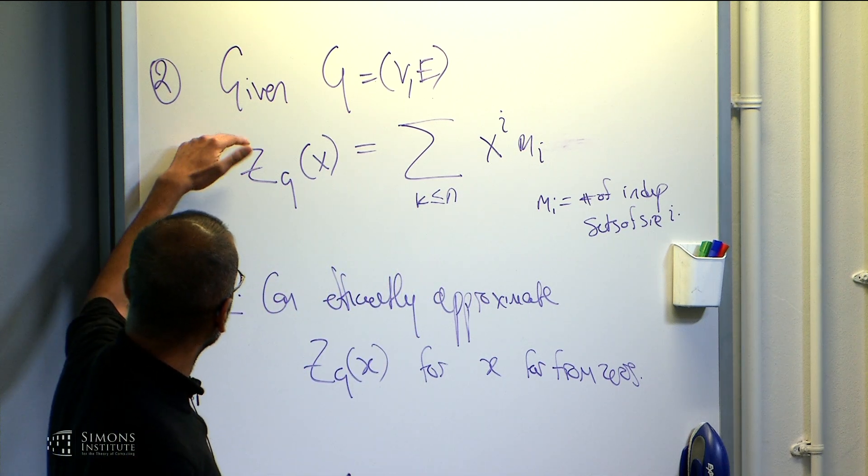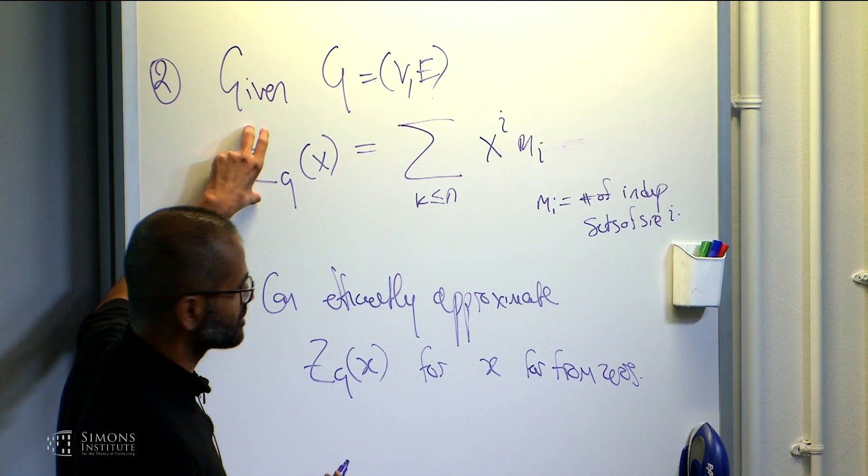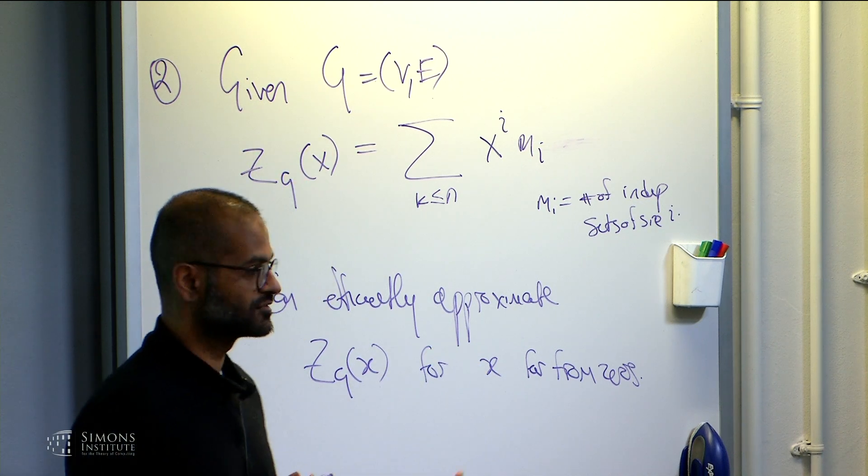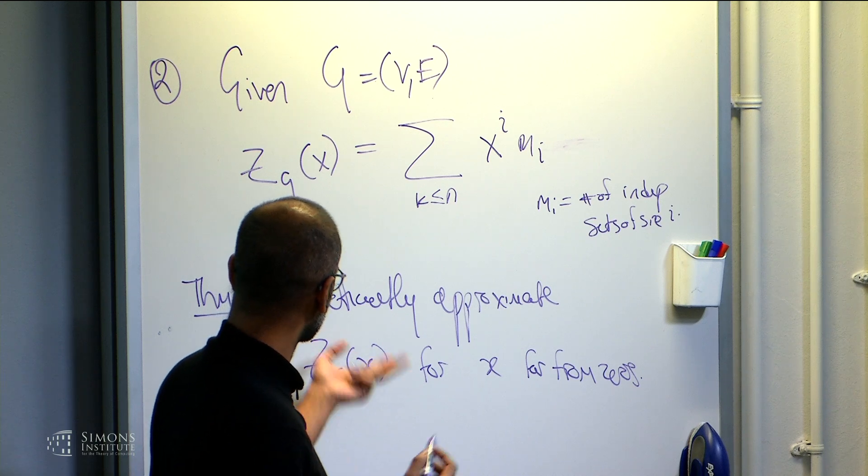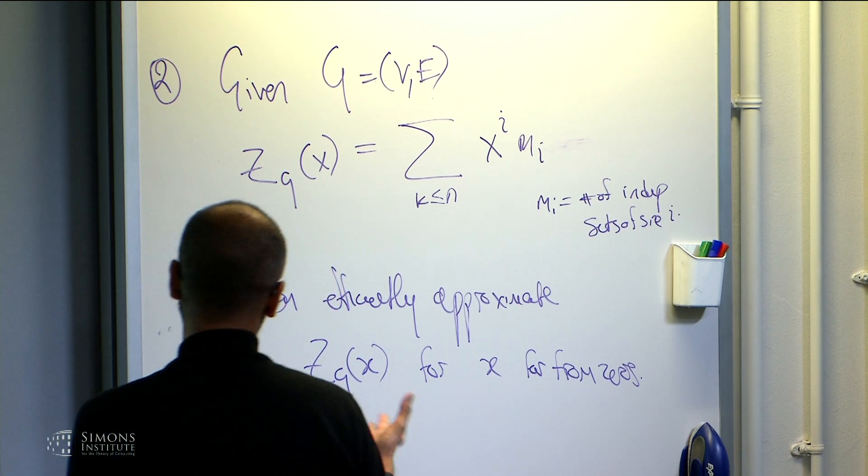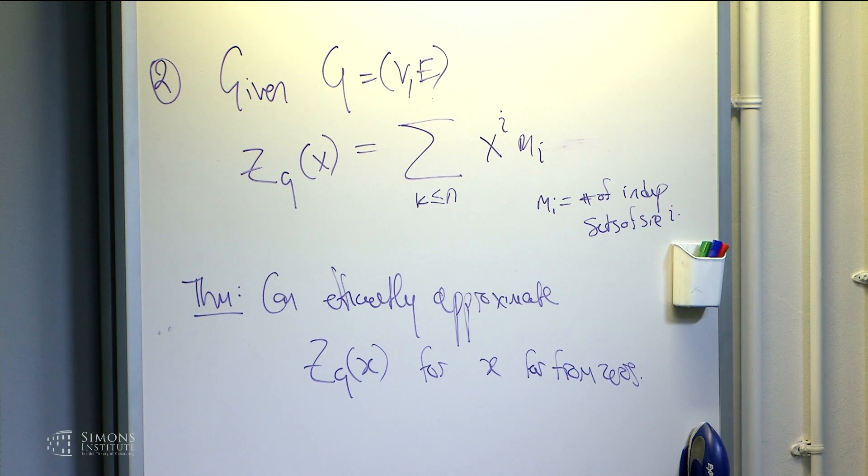So again, there's this interplay. Our goal is to evaluate this polynomial, and the places where you can do it exactly have to do with where the zeros of this polynomial lie. And again, some of these algorithms are real algorithms. They're not like some other algorithms that you can't code. They actually run fast on a computer.